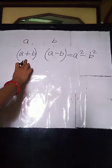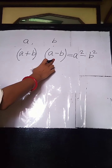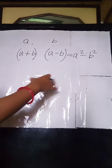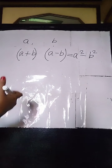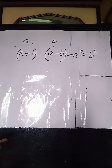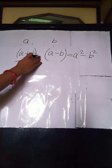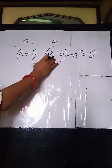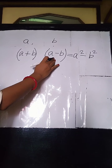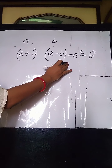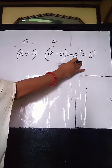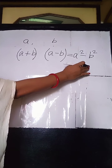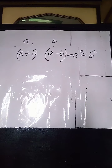So, A plus B into A minus B is equal to A square minus B square. The product of the sum of two terms and the difference of two terms is equal to the difference of the square of the first term and the square of the second term.